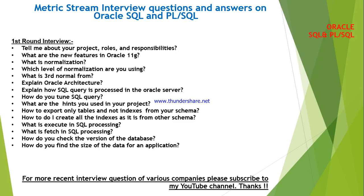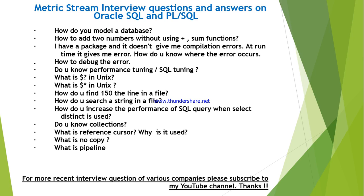Further questions: how do you model a database, how to add two numbers without using the plus or some functions. I have a package and it does not give a compilation error but gives an error at runtime — how do you know where the error occurs and how to debug it. How do you know the performance of SQL tuning? They also asked Unix questions: what is dollar ($) in Unix, what is dollar star ($*) in Unix, how do you find the 150th line in a file, how do you search a string in a file, and how do you increase the performance of an SQL query. We should not use DISTINCT — when you use it, performance will definitely be reduced, so you can go for another technique or function.